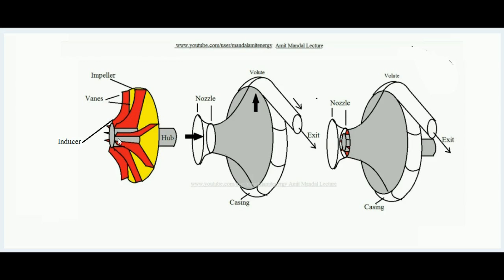The rotor or impeller, which consists of vanes, is assembled with the casing. When this rotor rotates inside the casing, the air trapped between the vanes also rotates, developing a centrifugal force. The air rushes in the radial direction toward the peripheral end — the volute — where high pressure air is collected.